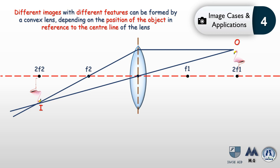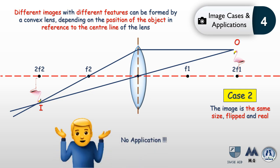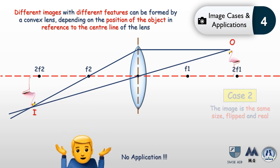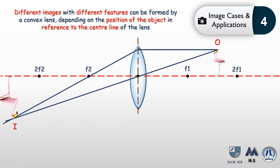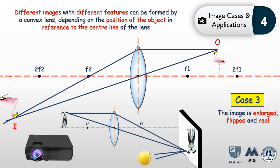Case 2, where the image is the same size as the object, flipped, and real, has no practical application — there's no point in forming an image identical in size to the object when you could just look at the object directly. As we continue pushing the object closer — between f1 and 2f1 — the image moves further beyond 2f2 on the other side. This is Case 3: the image is enlarged, flipped, and real, requiring a screen. Since we are enlarging the image, this is used in projectors.